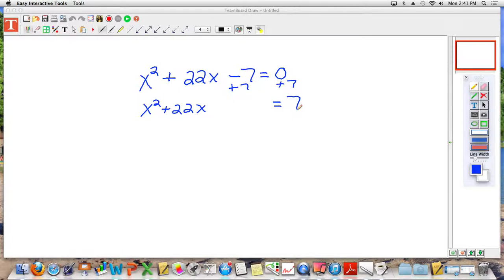All right, and then if you remember the steps, not the calculator steps, but the steps from before, I take that 22, I divide it by 2. 22 divided by 2 is 11. 11 squared is 121. So I add 121 to the left, which means I need to add 121 to the right.